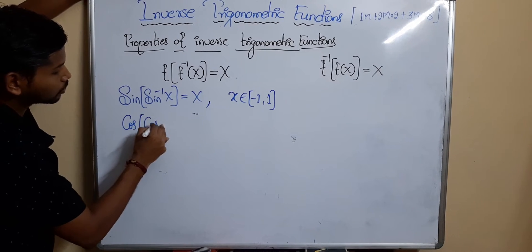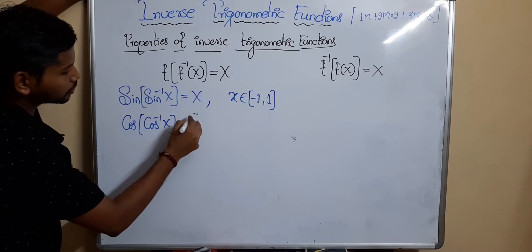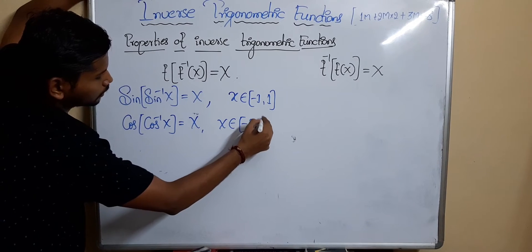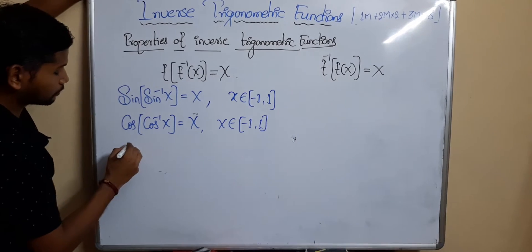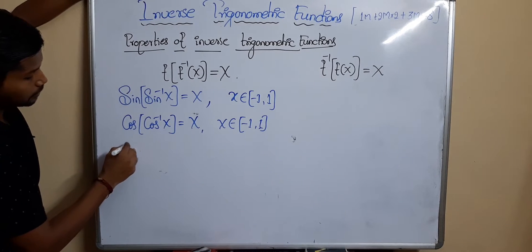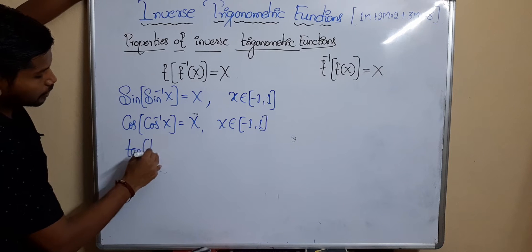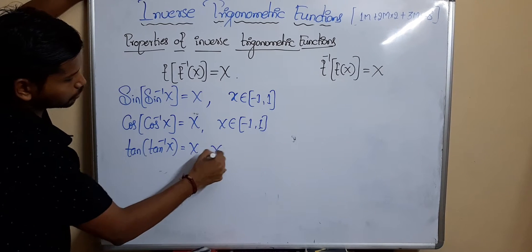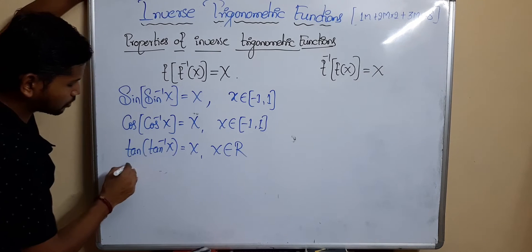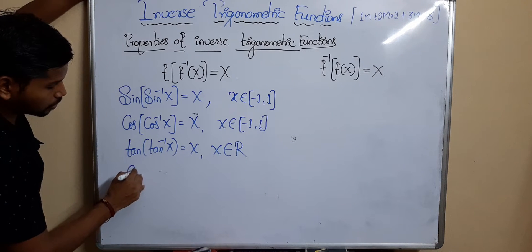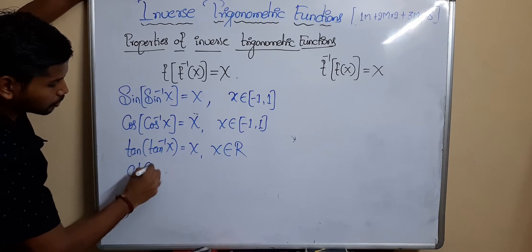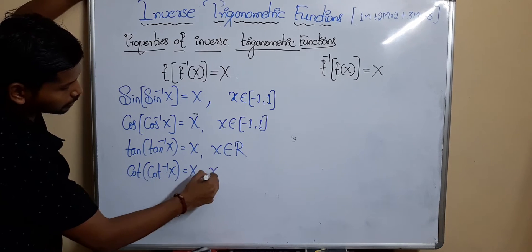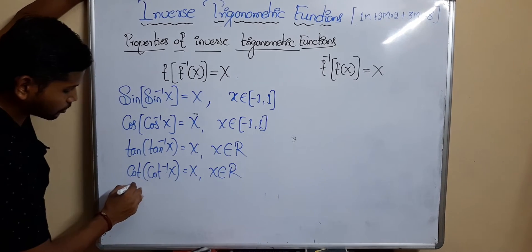cos(cos⁻¹(x)) = x, where x belongs to [-1, 1]. Next, tan(tan⁻¹(x)) = x, where x belongs to the real number system. Next, cot(cot⁻¹(x)) = x, where x also belongs to the real number system.